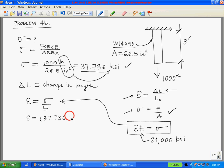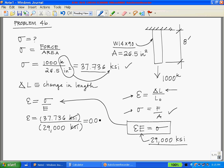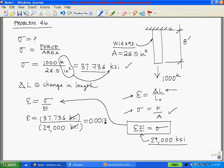Our stress is what we already calculated: 37.736 ksi divided by our modulus which is 29,000 ksi. Note that the units cancel out. Let's put that in the calculator: 37.736 divided by 29,000 equals 0.0013. Now we're going to use this equation.